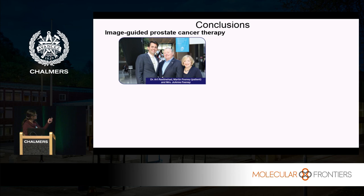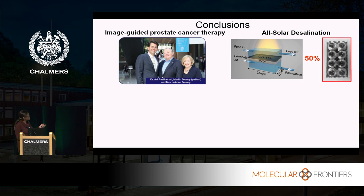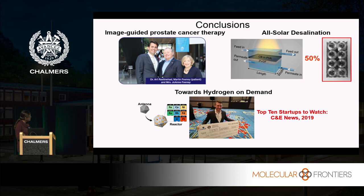So I'm taking you across three important stories that have to do with both society and sustainability. This is Art Rostenhad with patient number one, Martin Feeney, and Martin is with his wife Joanne — and I told you why they're smiling. I also introduced solar desalination and the idea of hydrogen on demand. The company we started — just named as one of the top 10 startups in the United States to watch — I hope you will be watching. With that, I want to thank you very much and introduce my wonderful crew of students. Thank you.